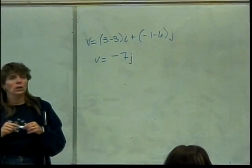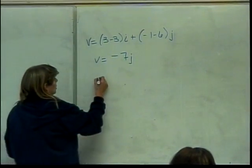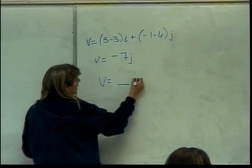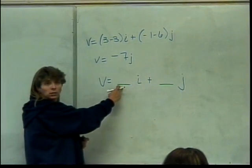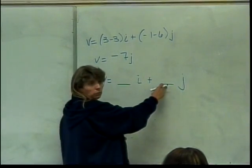By the way, in WebWork, the way these are set up is they say, okay, v is equal to blank i plus blank j. You would have to fill in the 0 here, and you'd have to remember the negative here.